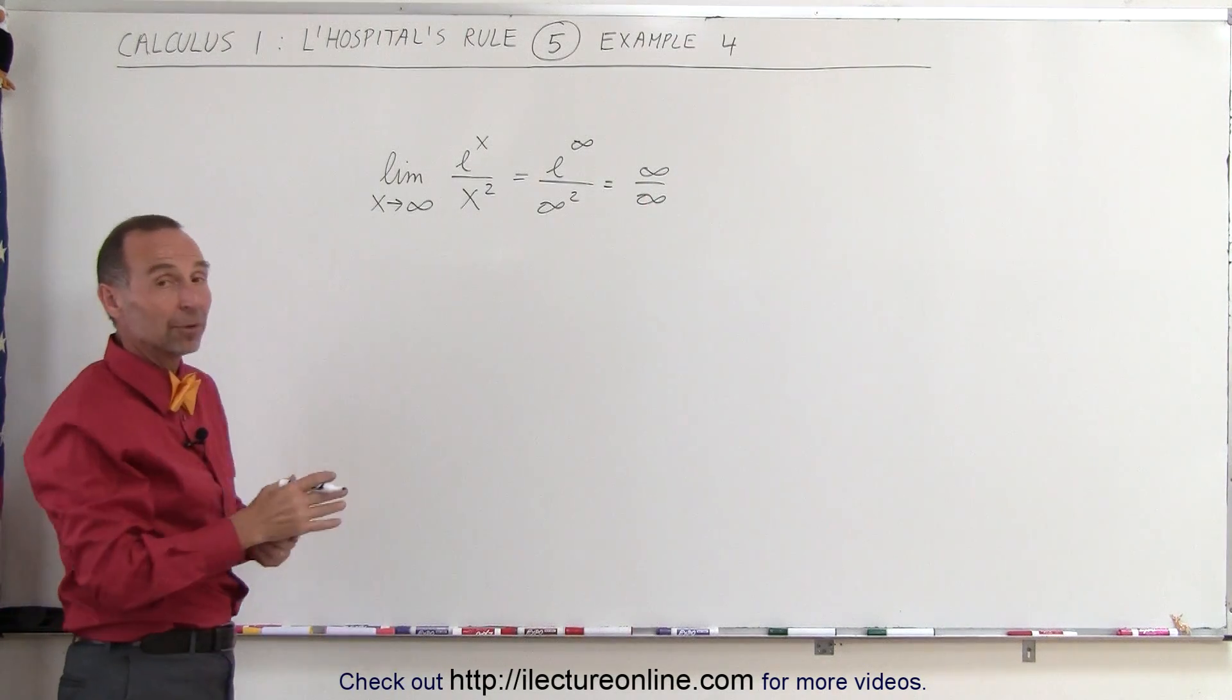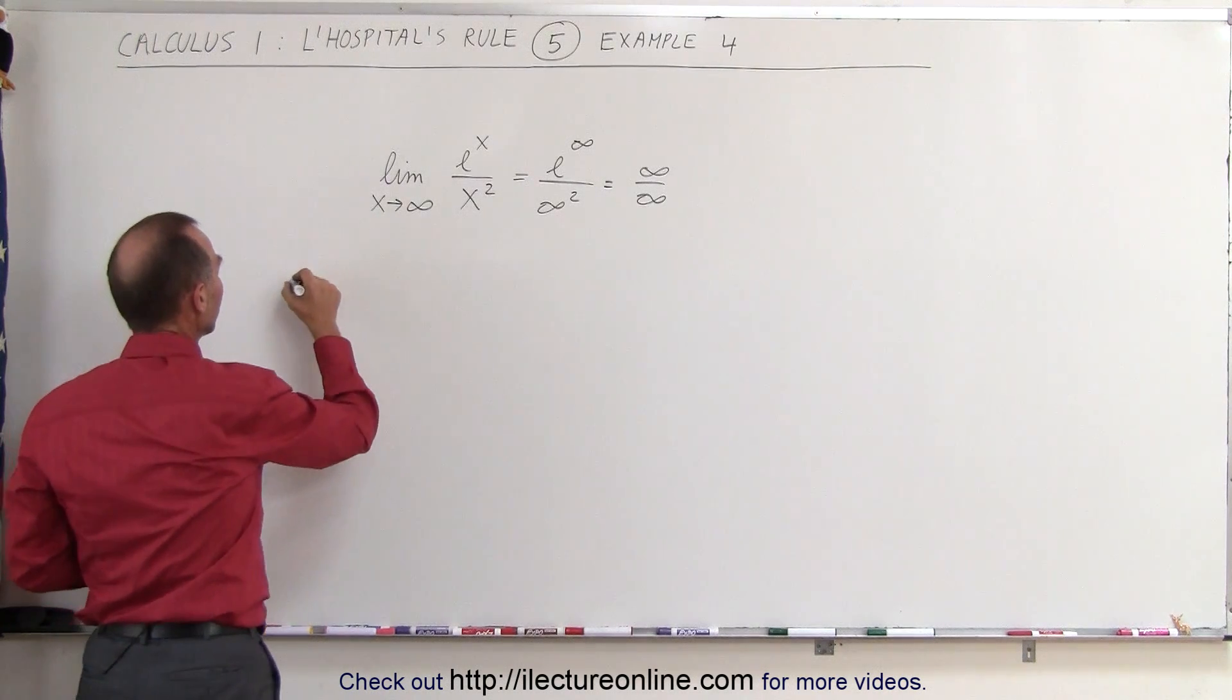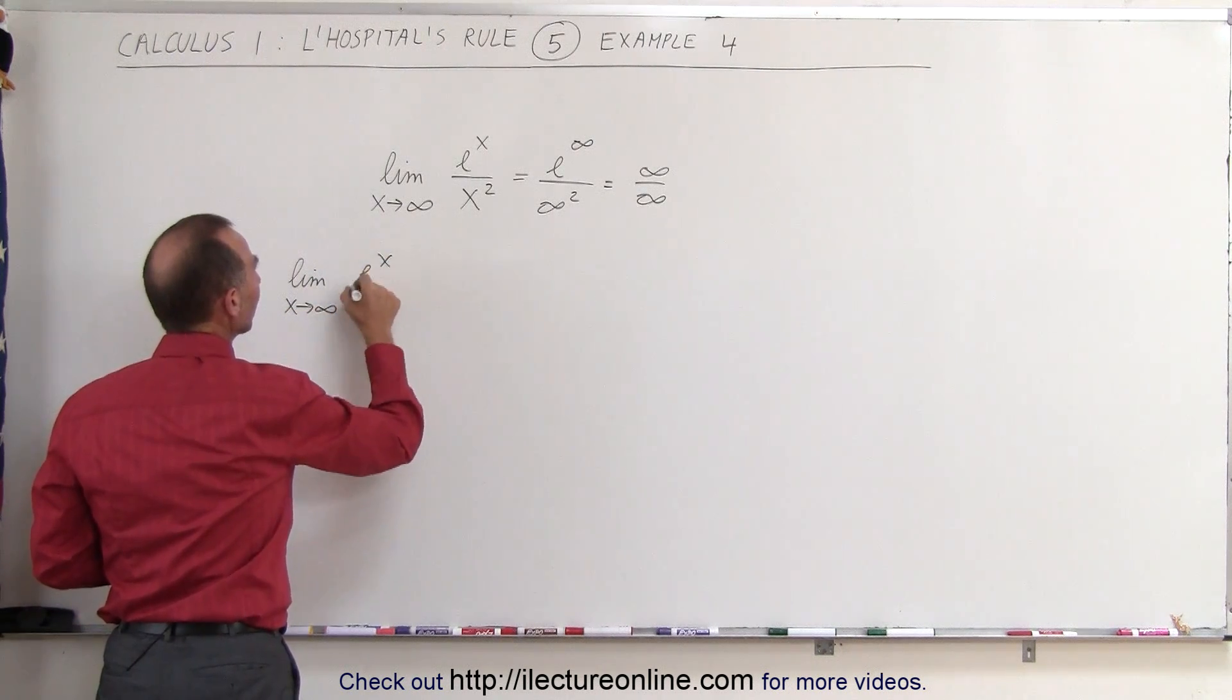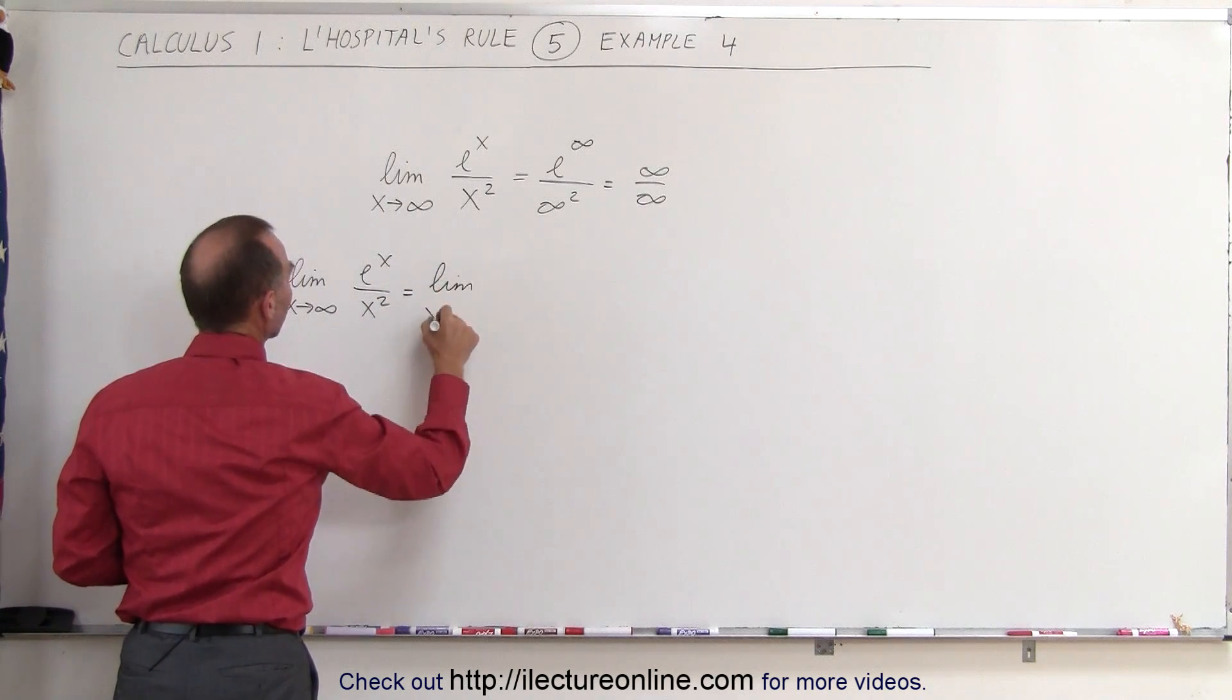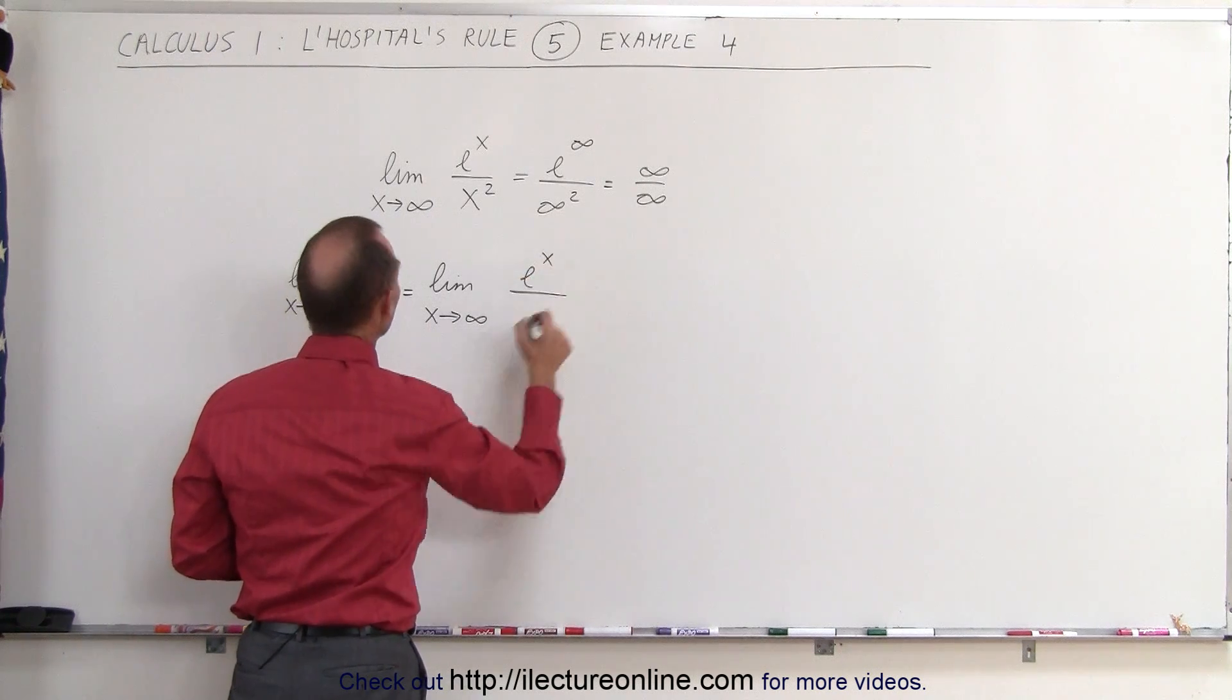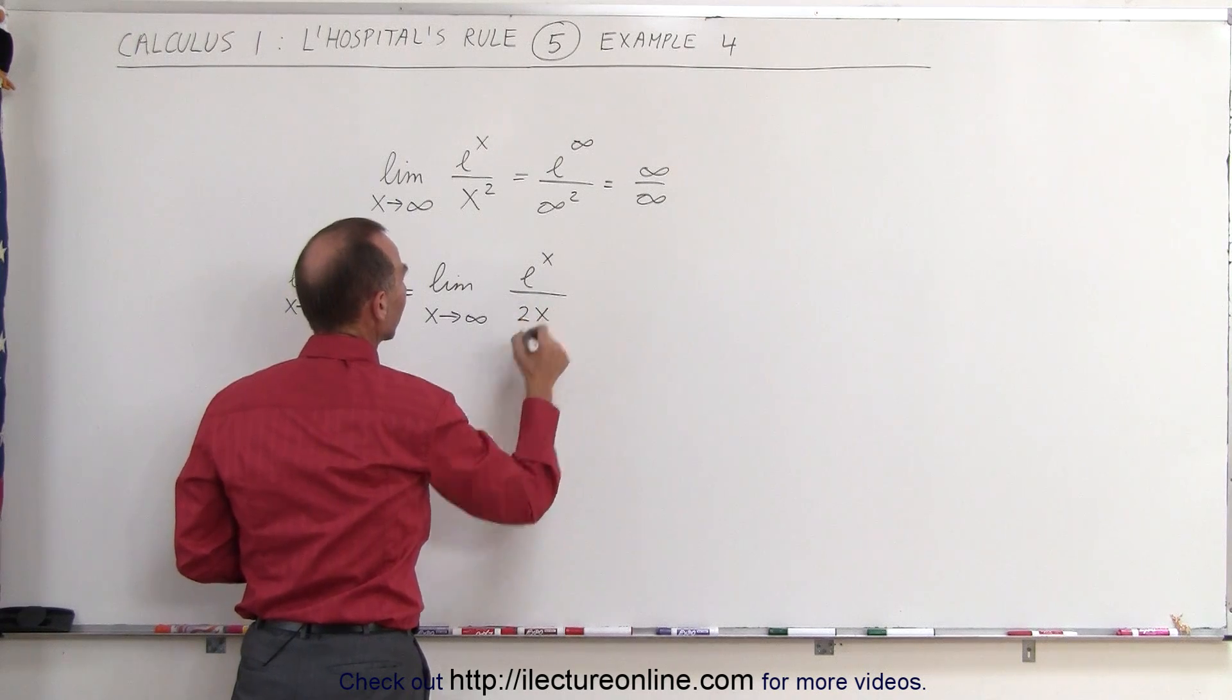So let's go ahead and use L'Hospital's rule by taking the derivative of both the numerator and the denominator. Therefore, we can say that the limit as x approaches infinity of e to the x divided by x squared is equal to the limit as x approaches infinity of e to the x divided by the derivative of the denominator, which would be 2 times x.